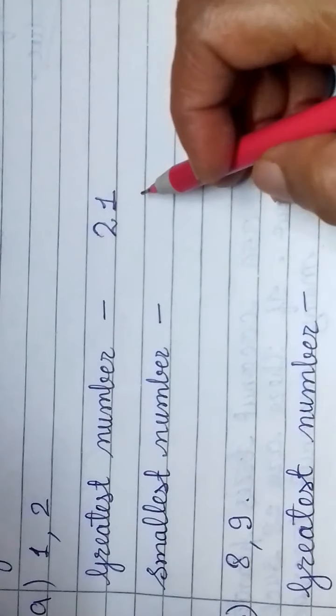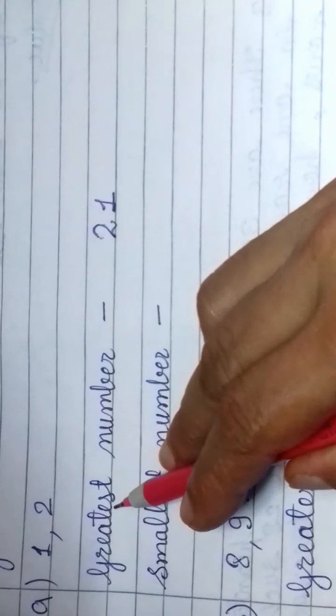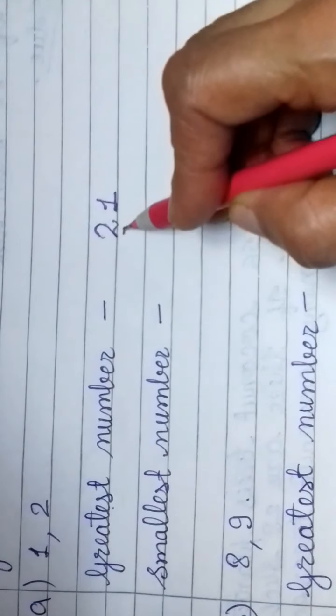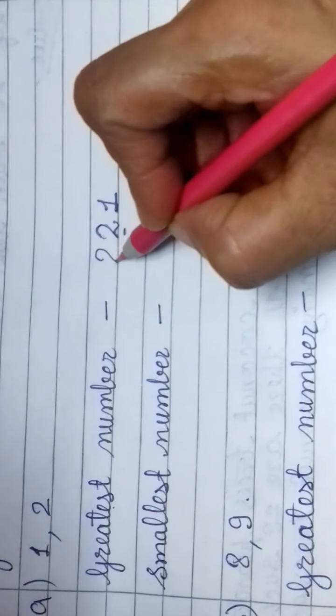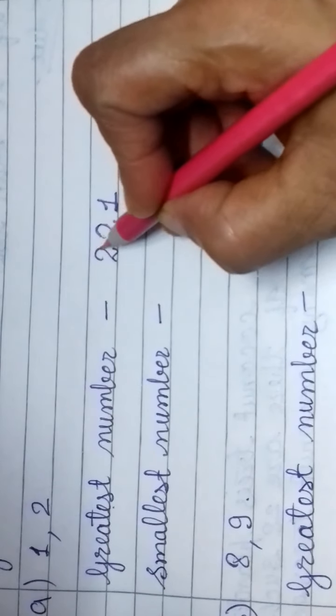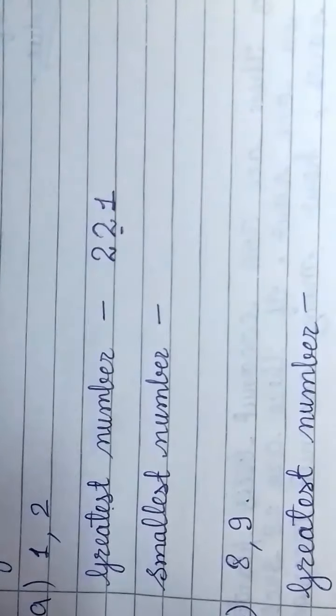Repeat which number we should do? If greatest number we should do, repeat the greatest number. 2 is greatest number, so we repeat it in the front. Right.